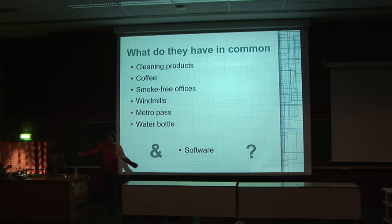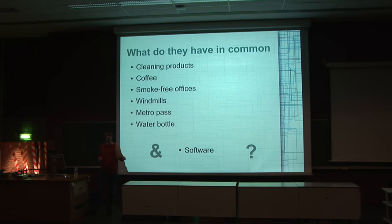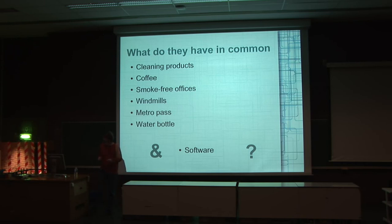You have choice. When you buy as a user, as a consumer, you have choice. You have different types of cleaning products. And some of these choices are value-based. You can decide that you want a coffee or you want a fair trade coffee, that you want a cleaning product, an eco product, that you want green electricity, and so on. And obviously, for software, that's the same — you can have commercial closed source or open source software.